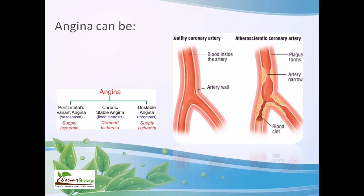The third type is Prinzmetal variant angina, caused by vasospasm — the spasticity of blood vessels in the body. The vessels become very tight, losing their fibrous elasticity, and as a result this can also cause the effects of angina.